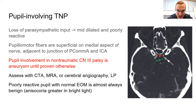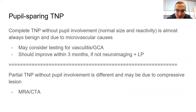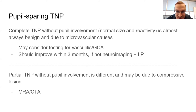The pupil fibers are superficial on the medial aspect of CN3, right where the PCoA and ICA come together — that's where aneurysms can affect them. So a non-traumatic third nerve palsy is aneurysm until proven otherwise. A complete third nerve palsy without pupil involvement, however, is almost always benign and microvascular — the inner substance is affected by ischemia but the superficial pupil fibers still get blood supply. But a partial third without pupil involvement is still scary, as it may evolve to include the pupillary fibers.